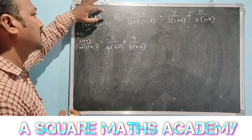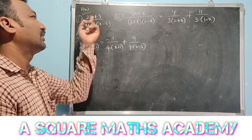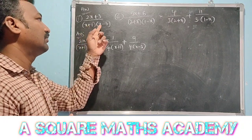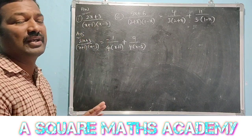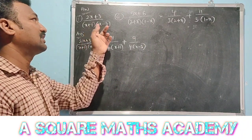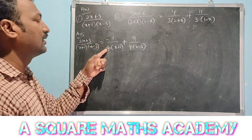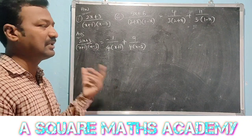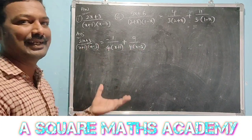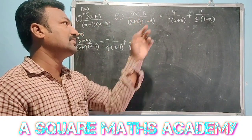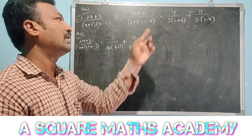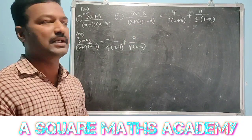For both problems, the degree of f of x is 1 and the degree of g of x is 2, so both are proper fractions with non-repeated linear factors. We write A by the first factor plus B by the second factor. For the first problem, A equals minus 1 by 4 and B equals minus 9 by 4, found by setting x plus 1 equals 0 giving x equals minus 1, and x minus 3 equals 0 giving x equals plus 3, then substituting in the equation. For the second problem, A equals 4 by 3 and B equals 11 by 3, found by substituting x equals minus 2 and x equals 1.